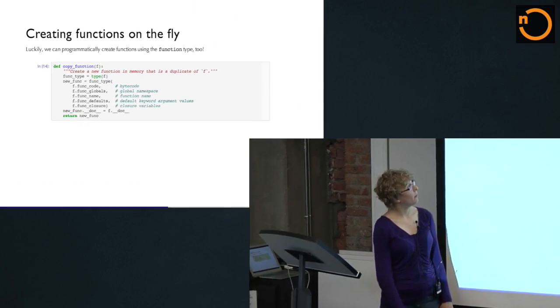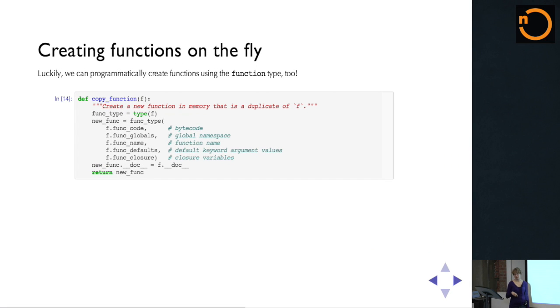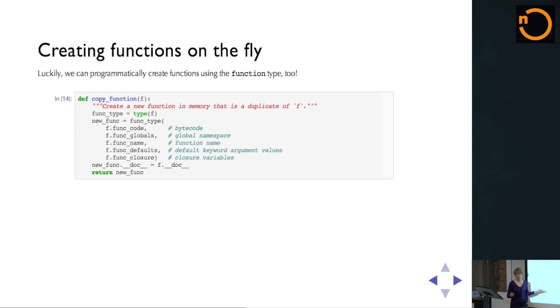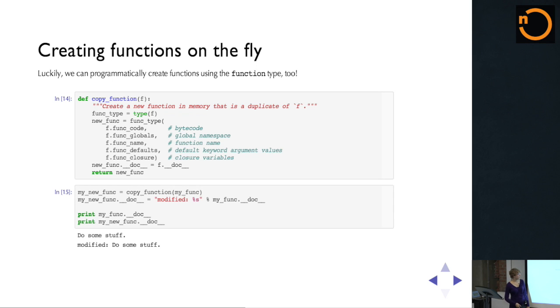Can we get around this by perhaps making them not be the same function? Everything in Python is an object, so we can also create functions on the fly. Functions also have a type, which is the function type. Here's a function that takes a function as an argument and copies it, returning the copy. You don't need to worry too much about the details — this is really getting into the internals of Python; the first argument it takes is the compiled bytecode for the function. Just know that you can actually duplicate functions. We take myfunc and copy it to create my_new_func, then change the docstring for my_new_func, and the second one is modified while the first one isn't.